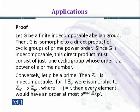Let G be a finite indecomposable abelian group. Then G is isomorphic to a direct product of cyclic groups of prime power order. Since G is indecomposable, this direct product must consist of just one cyclic group whose order is a power of a prime number.